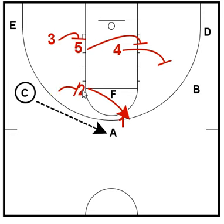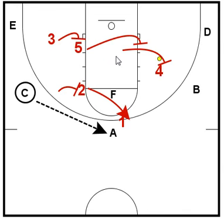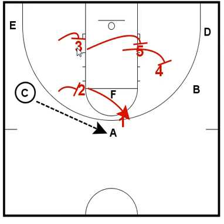2 is going to come over and set up at the elbow area. 4 is going to come up a little higher — he's got that next pass to B or the skip pass to D, that's why 4 is going to be there. 5 is going to come over the block, and then 3 is going to come over and be right there on the opposite block as well.